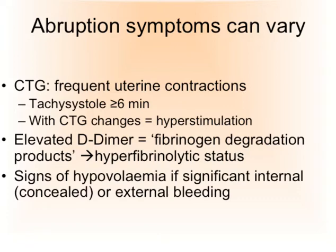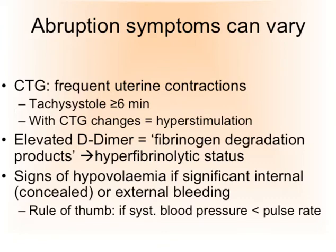Other signs include hypovolemia. It's very difficult if there is no obvious external bleeding — still, the lady can lose quite some blood internally in a concealed abruption, or there may be significant external PV bleeding. As a rule of thumb for hypovolemia, if the systolic blood pressure is less than the pulse rate, that is a simple definition for hypovolemia, apart from the other typical symptoms: clammy, cold skin, and a facial expression which expresses fear.